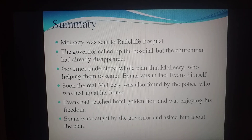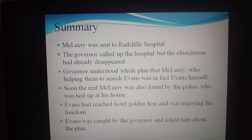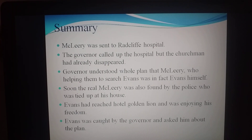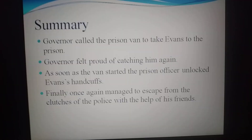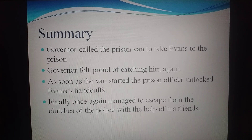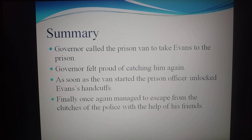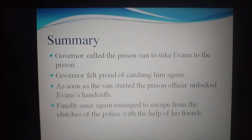But as soon as the van started, the prison officer unlocked Evans' handcuffs and asked the driver to drive fast. So once again, Evans managed to escape from the clutches of the police with the help of his friends. Evans had fooled the governor again — both the prison officer and the prison van were part of the plan devised by Evans' friends. And that is the story of Evans Tries an O-level. I hope you all understand. Thank you, children.